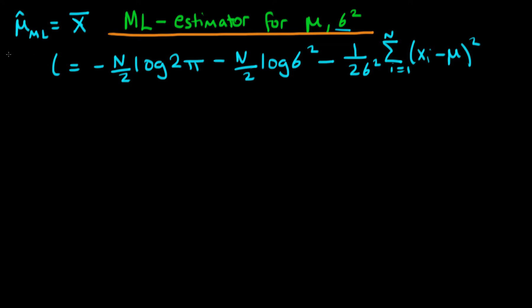In the end of the last video, we derived the maximum likelihood estimator for the population mean mu, which we call mu hat maximum likelihood, and it was found to be equal to the sample mean x bar.